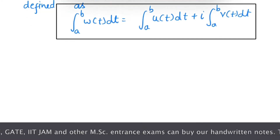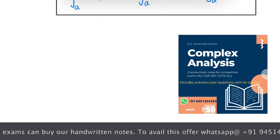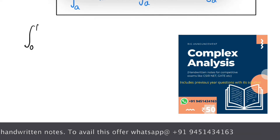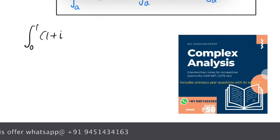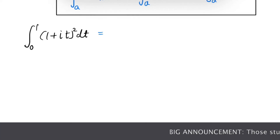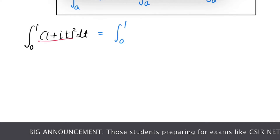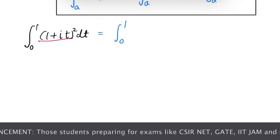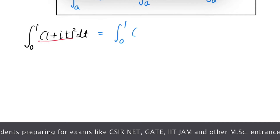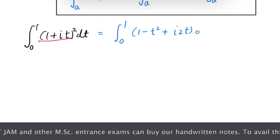Now let's do a problem on this concept. We have to integrate from 0 to 1 of (1 + i·t)² dt. Let's integrate this complex function. We expand the integrand: after simplification we will have the integral from 0 to 1 of (1 − t² + i·2t) dt.